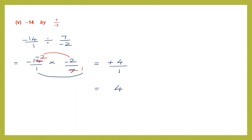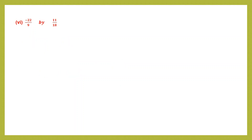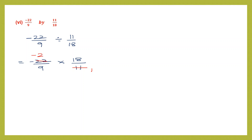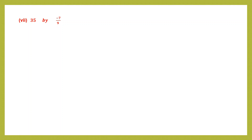Question 6: minus 22 by 9 divided by 11 by 18. Division changes to multiplication; reciprocal of 11 by 18 is 18 by 11. Cancel 11 and 22 giving minus 1 and 2; cancel 9 and 18 giving 1 and 2. Multiply numerators: minus 2 into 2 is minus 4. Denominators: 1 into 1 is 1. Answer is minus 4.